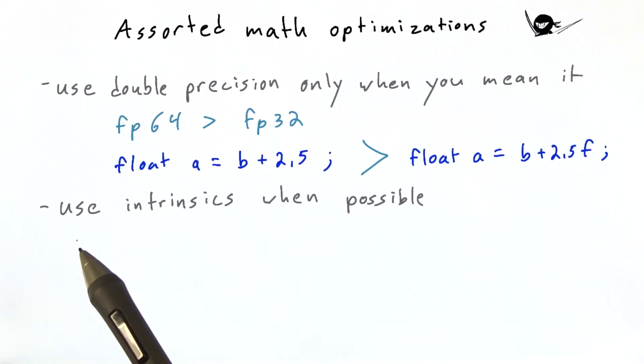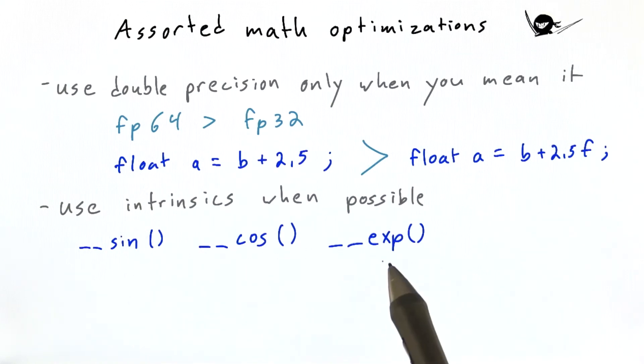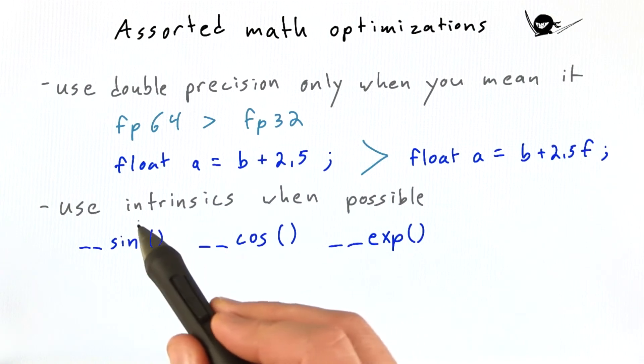A second math-oriented optimization is to use intrinsics whenever possible for common operations. CUDA supports special versions of many common math operations, like sine and cosine and exponent, that are called intrinsics.